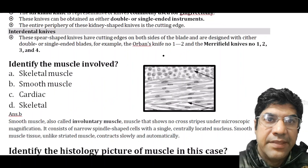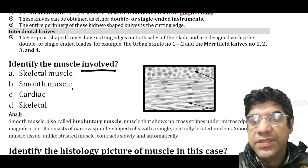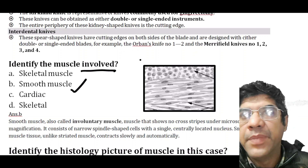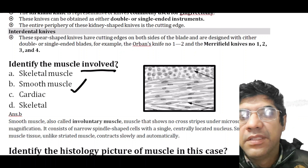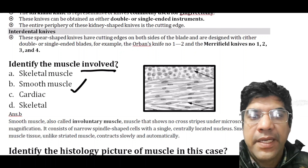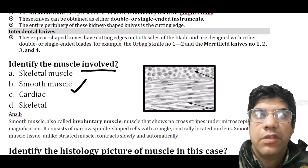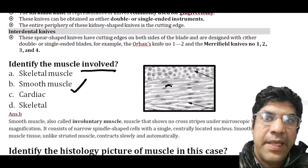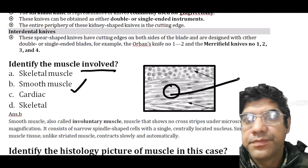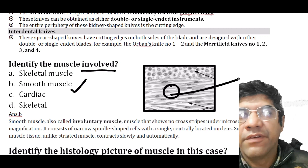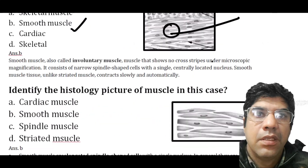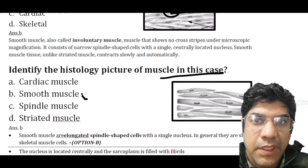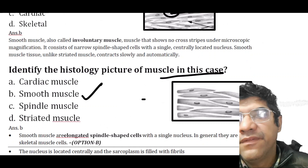Identify the muscle involved — the answer is smooth muscle. Smooth muscle cells, also known as myocytes, have a narrow spindle-shaped appearance. The cells are elongated with tapered ends, and each cell contains a single centrally placed nucleus. These are the features of smooth muscle.